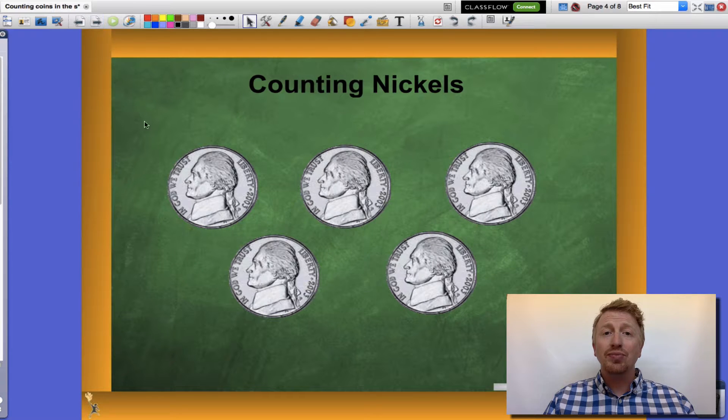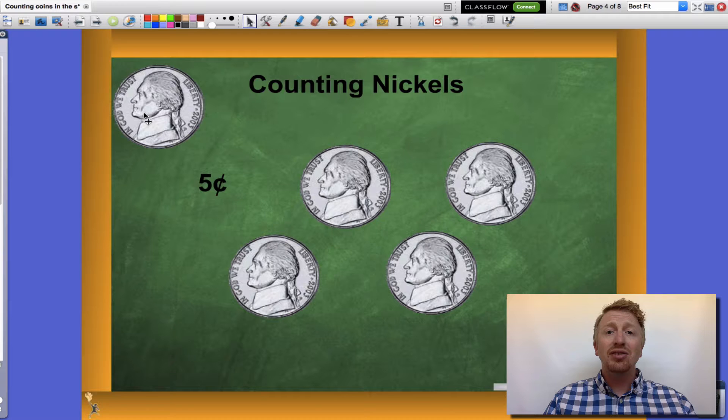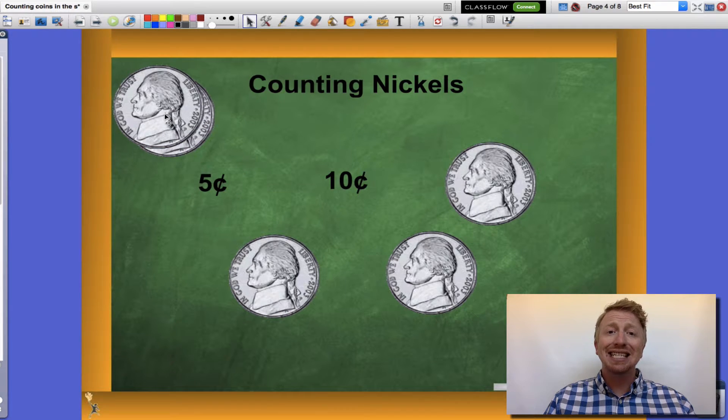Let's take a look at nickels. Nickels are each worth five cents each. So I know I need to count by fives if I'm counting a group of nickels. One nickel is five cents, two nickels are ten cents,